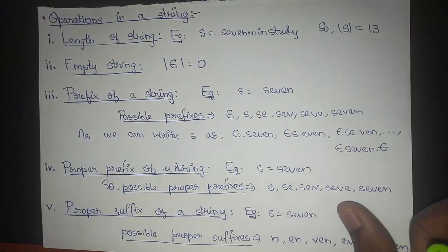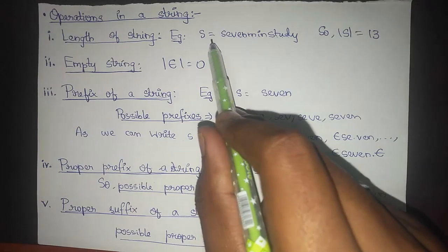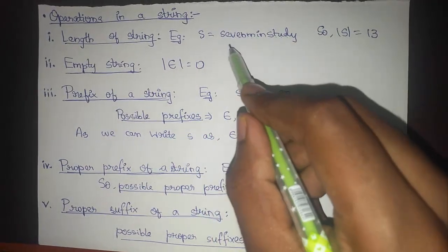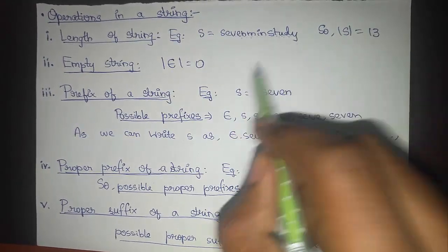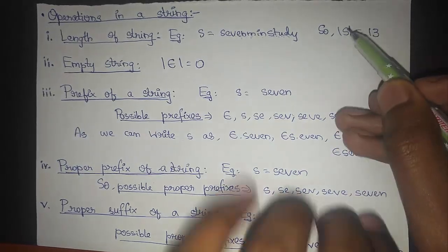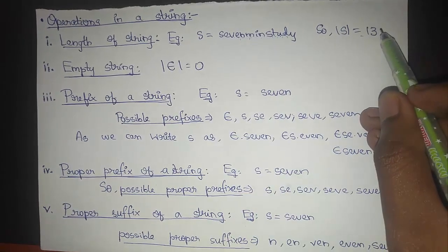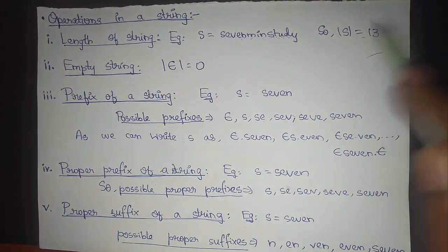What are operations on strings? The length of a string is the total number of characters present in that string. For example, if S is the string '7MinuteStudy', counting the characters gives 13. The length is denoted by the modulus operator, so |S| = 13 means the size or length of the string is 13.